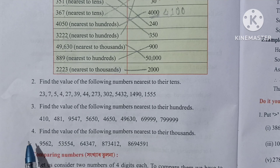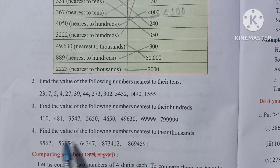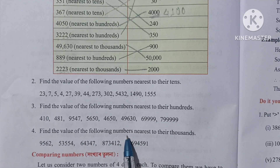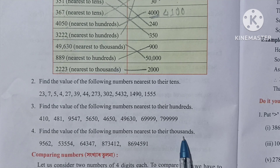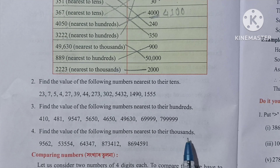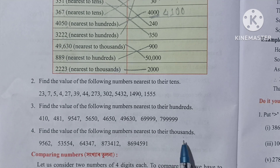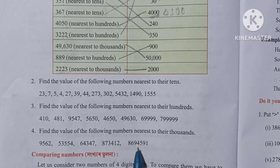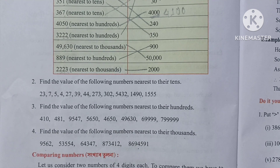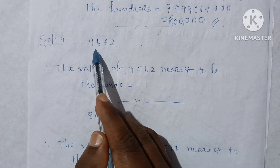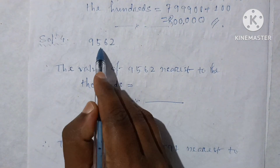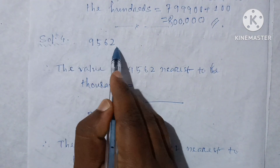Question number 4: Find the value of the following numbers nearest to their thousands. The number is 9,562.